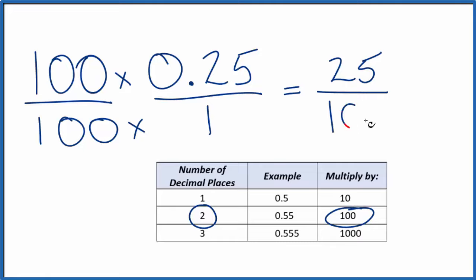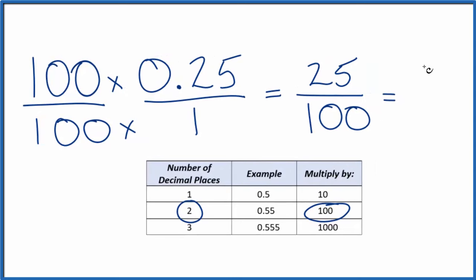100 times 1, that is 100. Now we have a fraction. We can simplify the fraction. 25 goes into itself one time, and 25 goes into 100 four times. So 25 over 100, that's the same as 1 fourth.